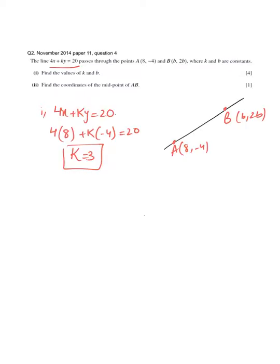Also, for coordinate B which is (b, 2b), I can use the same line because this coordinate will also satisfy the line. This time the x coordinate is b, the y coordinate is 2b, equate it to 20 and from here you can evaluate the value of b.